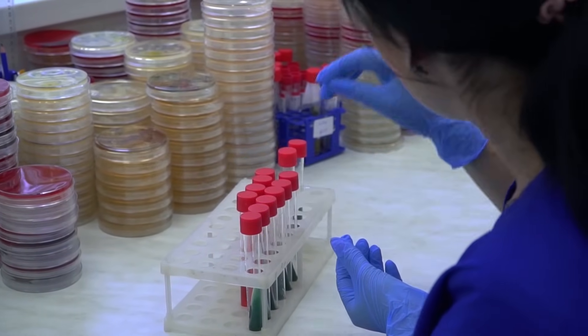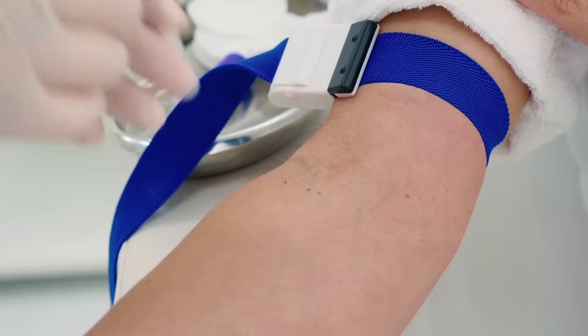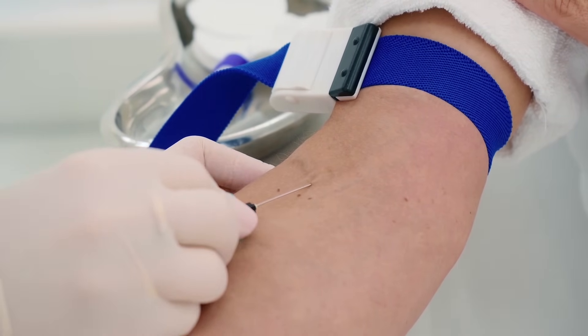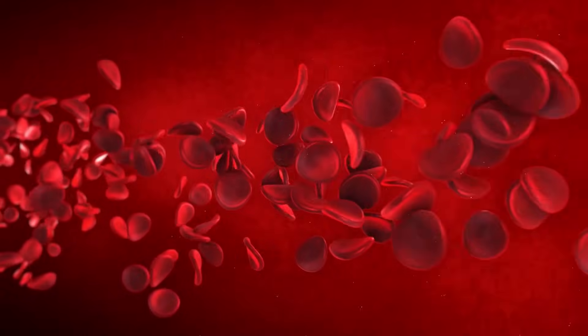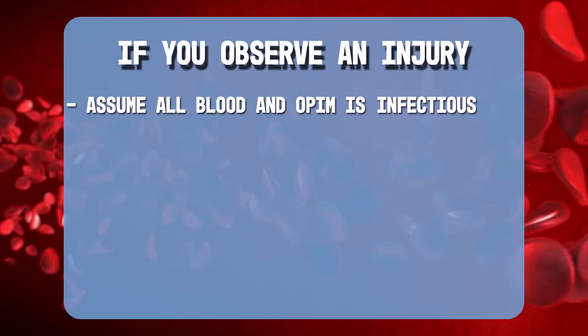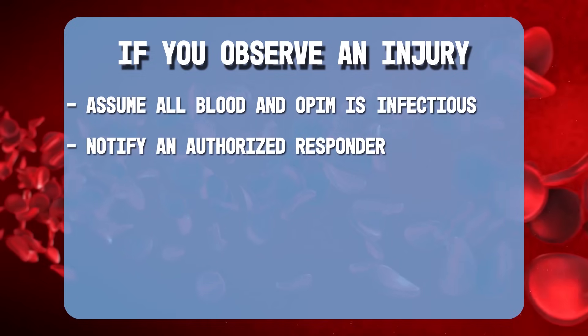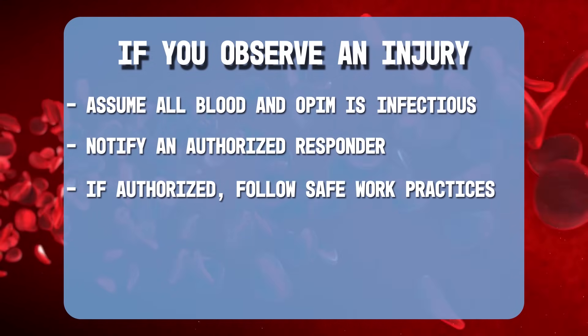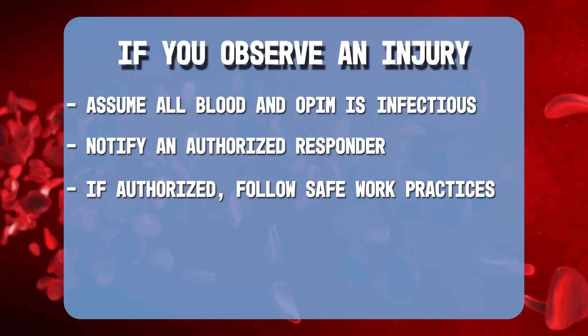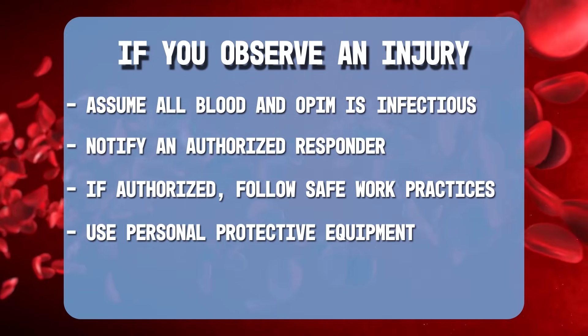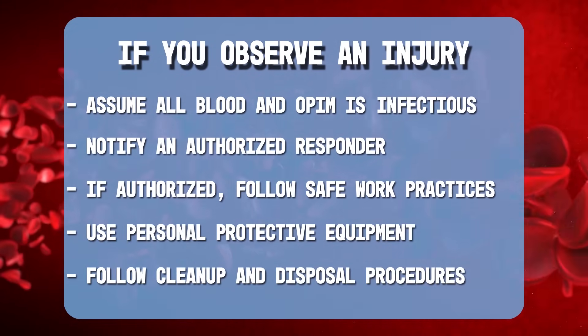Exposure incidents must be reported to a supervisor for documentation. Your company will make a free confidential medical evaluation available, which will include a blood test. The company will attempt to locate and get a blood sample from the contamination source. If you have not already received a hepatitis B vaccination, it will be made available to you. If you observe an injury, assume that all blood and OPIM is infectious. Notify someone who is trained and equipped to respond properly. If you are trained to provide first aid or perform clean-up, follow established safe work practices, use personal protective equipment, and follow the company clean-up and disposal procedures.